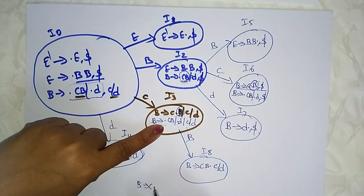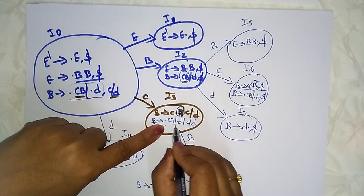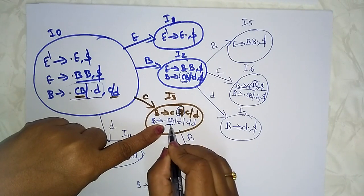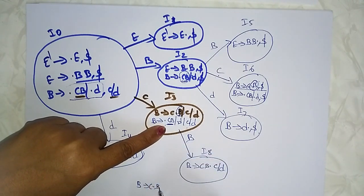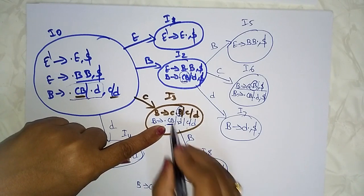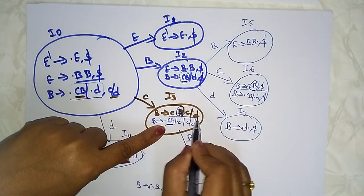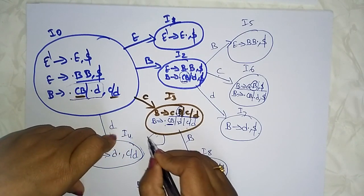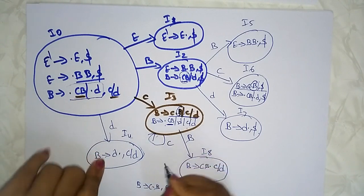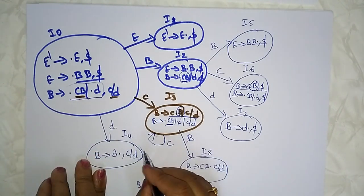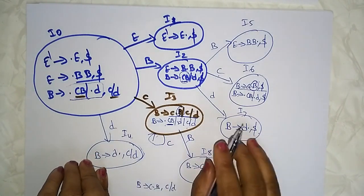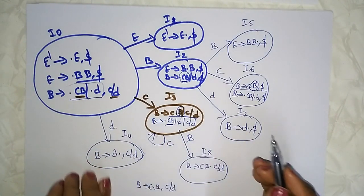On 'c' in I8, you get B → C · B again with c/d lookahead — this loops back, so just take it as a loop on 'c'. On 'd', the state is similarly resolved.